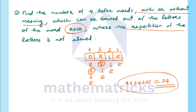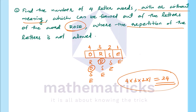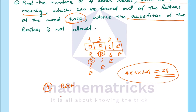This is the easy way to do permutation. Here we have four letters: R, O, S, E. We have 4 letters and 24 arrangements.